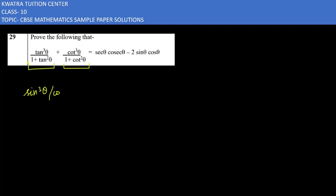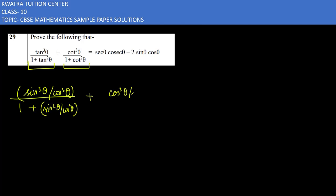So 1 + tan²θ becomes 1 + sin²θ/cos²θ. Then cot³θ is written as cos³θ/sin³θ, and 1 + cot²θ becomes 1 + cos²θ/sin²θ. Now we simplify these expressions.